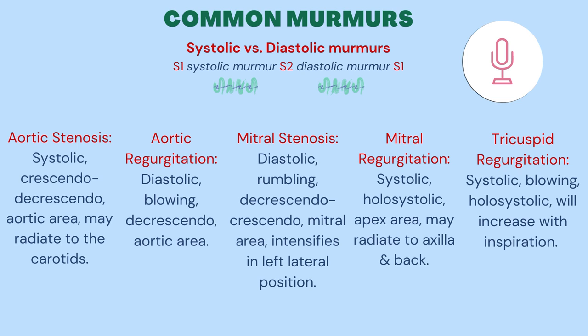Mitral regurgitation is a systolic murmur because when the left ventricle contracts in systole, blood is forced back through the mitral valve and into the left atrium, and may be due to a dilated mitral annulus that occurs due to left ventricular enlargement and dysfunction. This is referred to as functional mitral regurgitation.